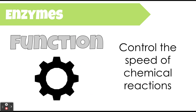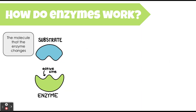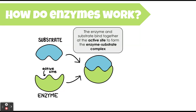The function of enzymes is to control the speed of chemical reactions, and there are really two ways that enzymes do this. Generically, what happens is you have an enzyme that has a specific shape, and it's going to bind like puzzle pieces to a substrate. A substrate is the molecule that the enzyme is going to make a change on. The enzyme and substrate bind together at a spot called the active site — it's active because that is where the enzyme does its thing and makes a chemical reaction happen.